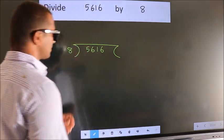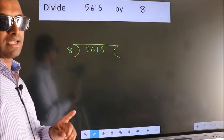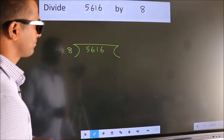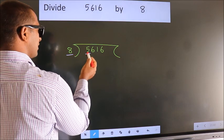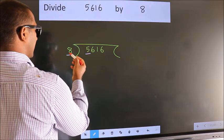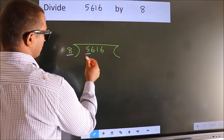This is your step 1. Next, here we have 5, here 8. 5 is smaller than 8, so we should take two numbers: 56.